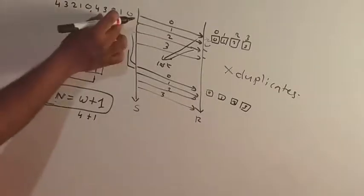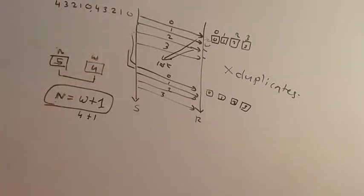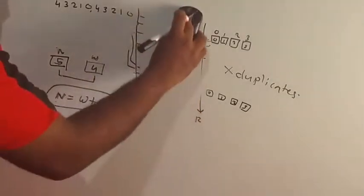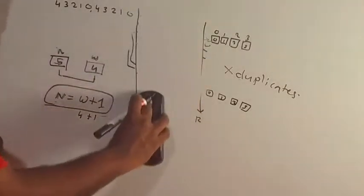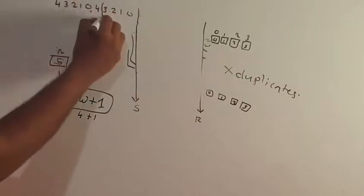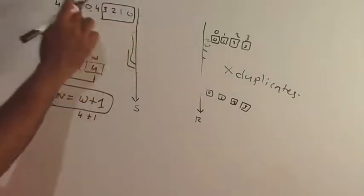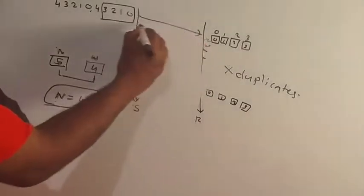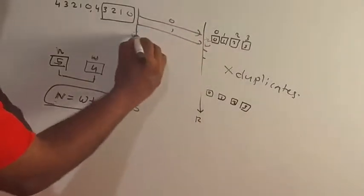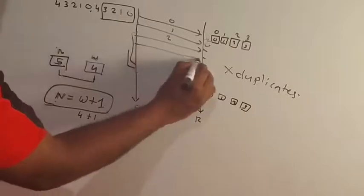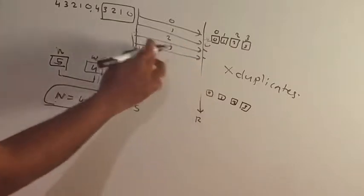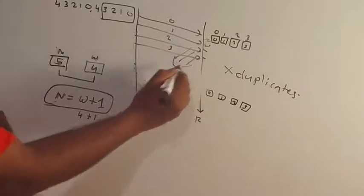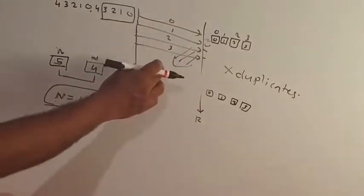With the advantage, we have the price as well. It's zero. First frame is sent. Second frame is sent. Third frame is sent. 0, 1, 2, 3, 4 frames are sent. Acknowledgement is sent in the same way.